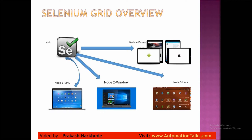There should be only one Hub in a Selenium Grid, with any number of nodes connected to it. Each node is a different machine with different hardware architecture, software architecture, and browsers. Nodes are all separate machines, and the Hub is a single machine that connects to all the different nodes.